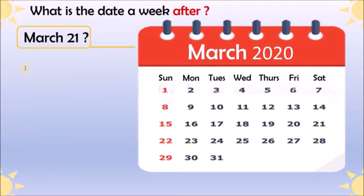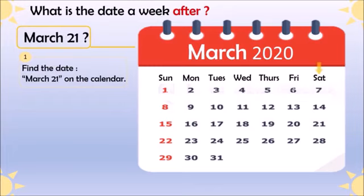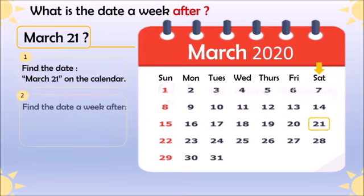The last example. The date given here is March 21. First we should find the date March 21 on the calendar — yes, it's a Saturday, the third Saturday.